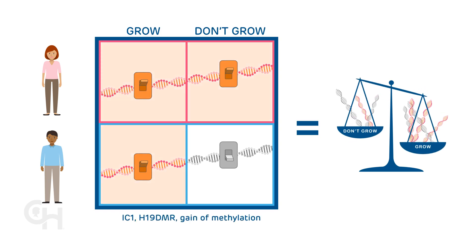IC1-H19-DMR gain of methylation occurs when the mother's grow switch is turned on, in addition to the father's grow switch.